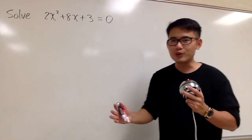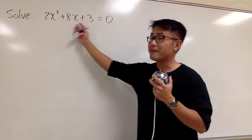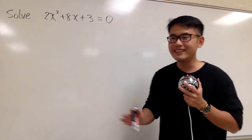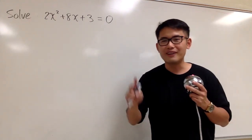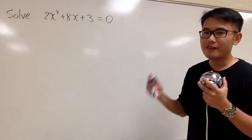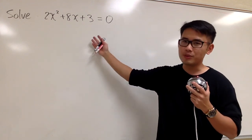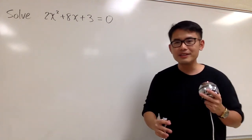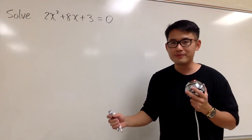So to solve a quadratic equation, we should first try factoring. But unfortunately, this is not factorable. So now we have two choices. The first one is we can use the quadratic formula to solve this, and the second one is we can try to solve this by completing the square.